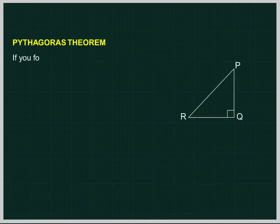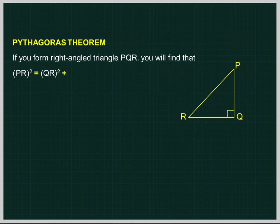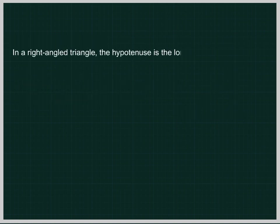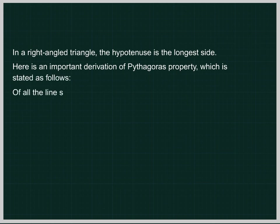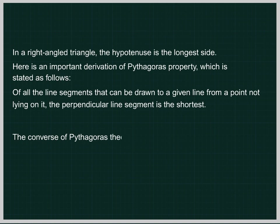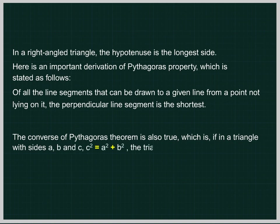Pythagoras Theorem. In a right-angled triangle PQR, PR squared equals QR squared plus PQ squared, or hypotenuse squared equals base squared plus perpendicular squared. This is called the Pythagoras theorem. In a right-angled triangle, the hypotenuse is the longest side. An important derivation states that of all the line segments that can be drawn to a given line from a point not lying on it, the perpendicular line segment is the shortest. The converse of the Pythagoras theorem is also true: if in a triangle with sides A, B, and C, C squared equals A squared plus B squared, then the triangle is necessarily a right-angled triangle.